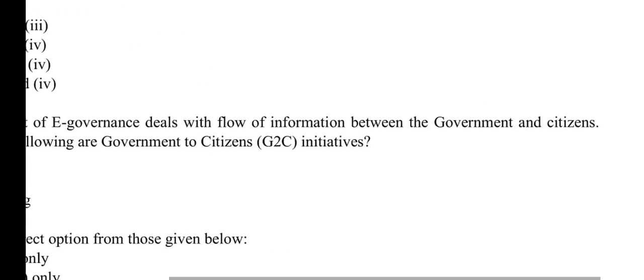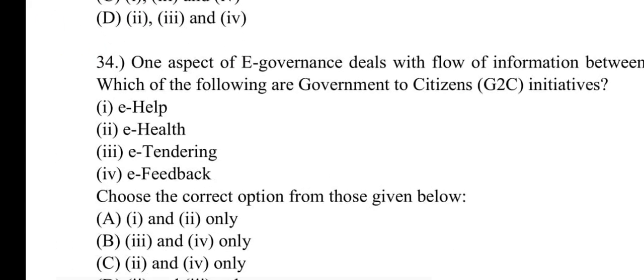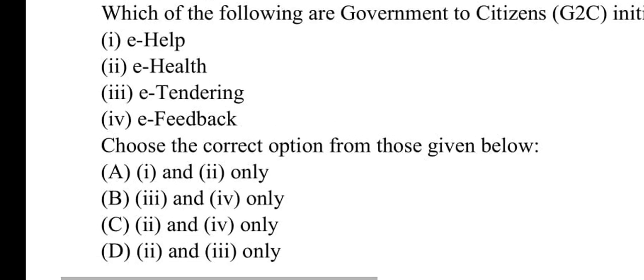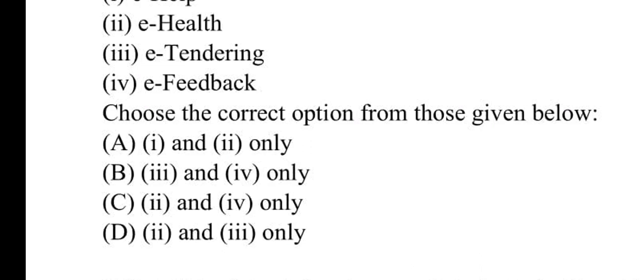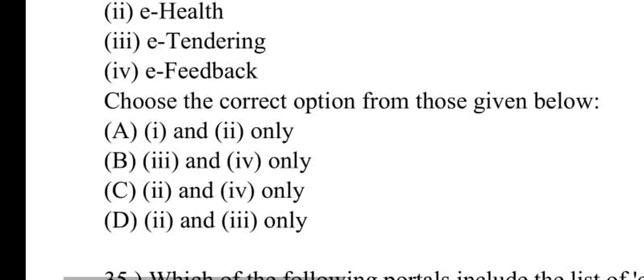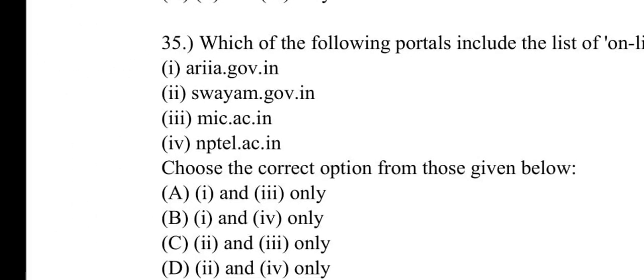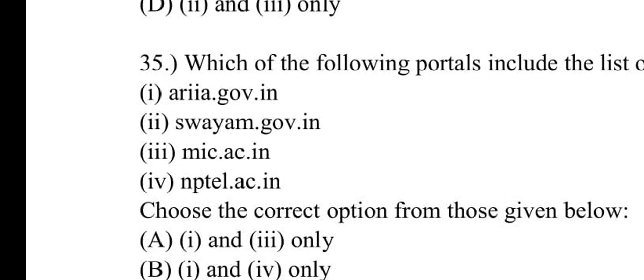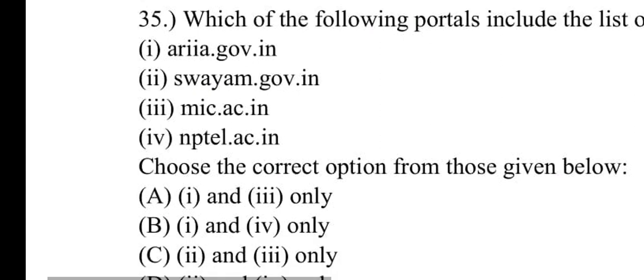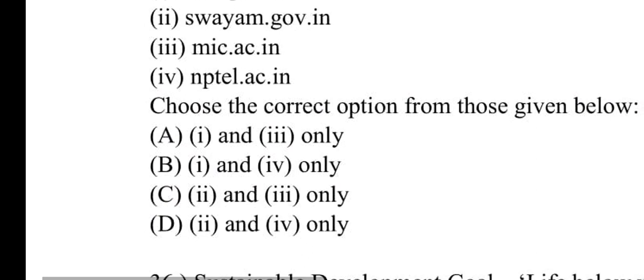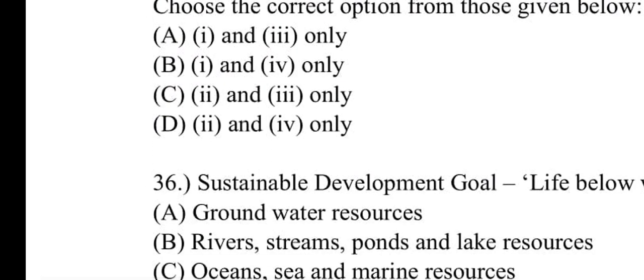Number thirty-four: One aspect of e-governance deals with flow of information between government and citizen. Which of the following are government-to-citizens G2C initiatives? Options are e-health, e-tendering, e-tender, e-feedback. Number A: 1 and 2 will be correct. Number thirty-five: Which of the following portals include the list of online courses? Options are ariu.gov.in, swayam.gov.in, mooc.iitm.ac.in, nptel.ac.in. Number D: 2 and 4 only will be correct.